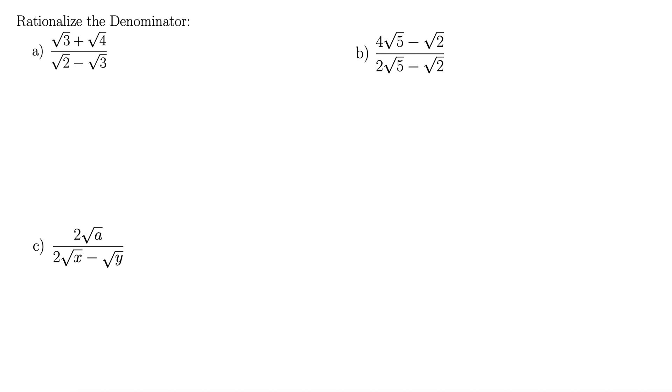Part A, we have rad 3 plus rad 4 over rad 2 minus rad 3. To rationalize the denominator, we're only going to focus on the denominator. We take the conjugate of that. Remember, the conjugate just means change the sign. So we'll do rad 2 plus rad 3. Up top, same thing, rad 2 plus rad 3.